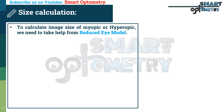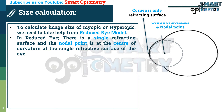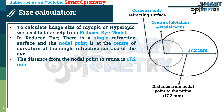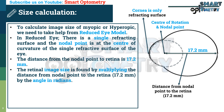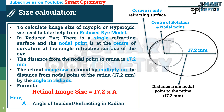To calculate image size of a myopic or hyperopic eye, we need to take help from the reduced eye model. In the reduced eye, there is a single refracting surface and the nodal point is at the center of curvature of the single refractive surface of the eye. The distance from the nodal point to the retina is 17.2 mm. The retinal image size is found by multiplying the distance from the nodal point to the retina, that is 17.2 mm, by the angle in radians. The formula is: retinal image size = 17.2 mm × the angle of incidence or refraction in radians.